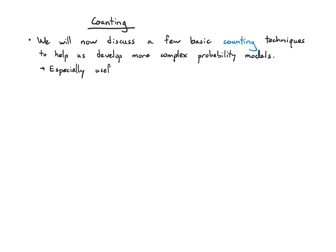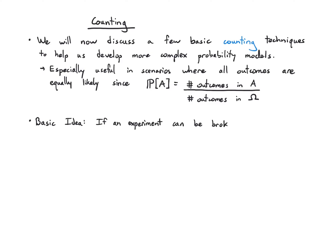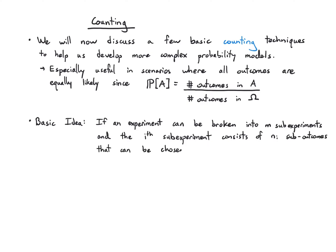These techniques are especially useful in scenarios where outcomes are equally likely — especially underlying outcomes. The reason is you can get the probability by just taking the number of outcomes in the event and dividing it by the number of outcomes in the total sample space. The basic idea is that if you have an experiment you can break into m sub-experiments, and the i-th sub-experiment has n_i outcomes, then the total number of outcomes is the product n1 times n2 up to n_m.